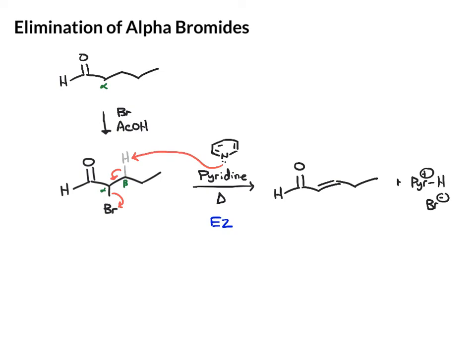So we get a pyridine salt plus an alpha-beta unsaturated carbonyl, and we know those are very, very useful in synthesis. They're often used for conjugate addition reactions. The driving force behind this elimination is specifically the fact that you're forming a conjugated system — this new alpha-beta double bond is in conjugation with the carbonyl.